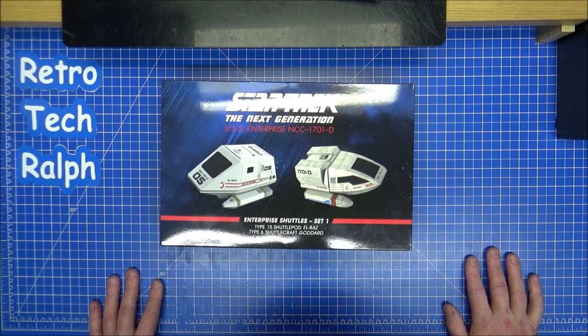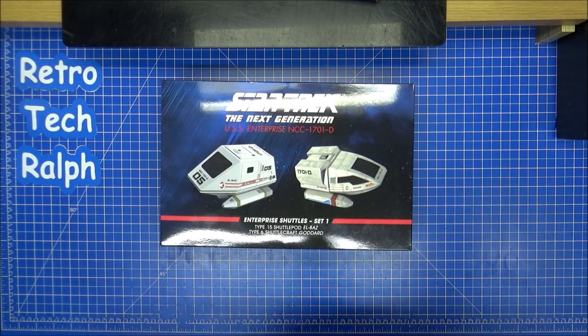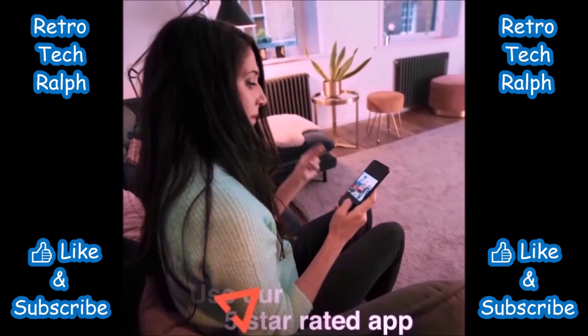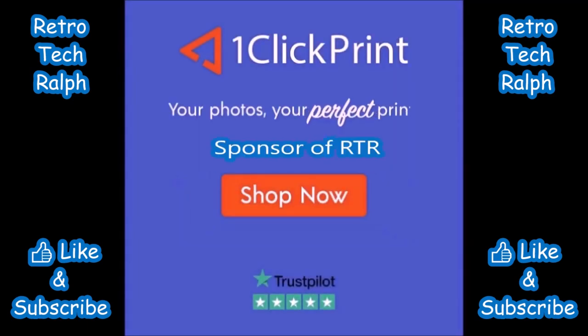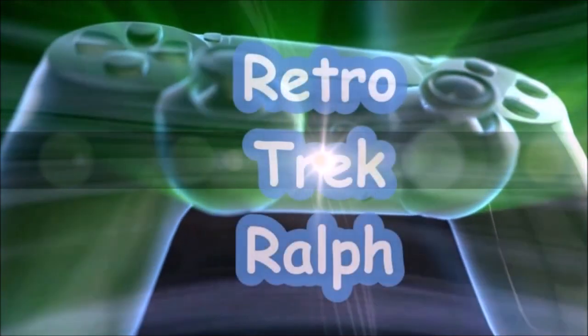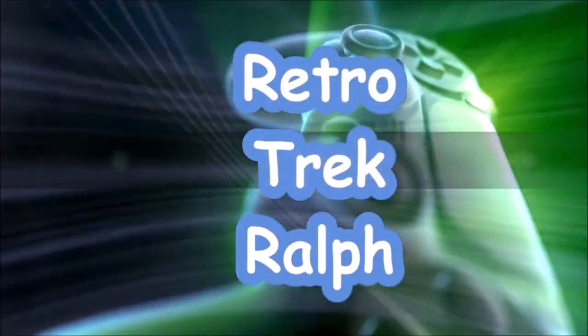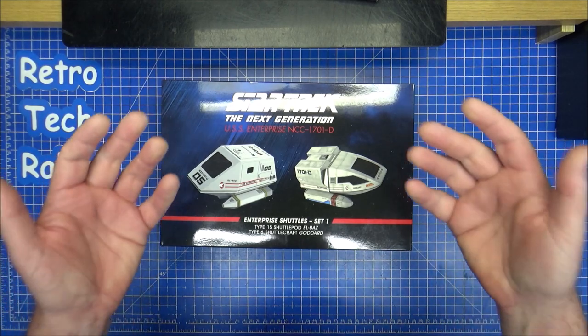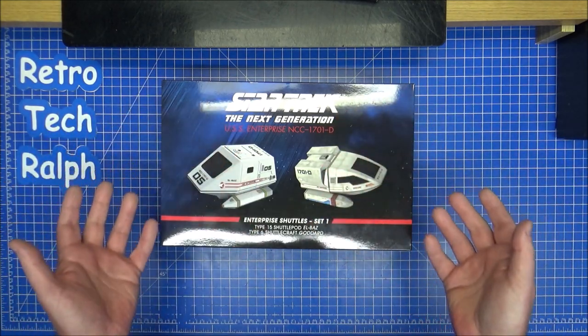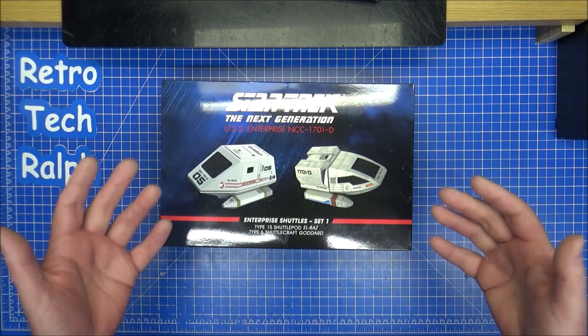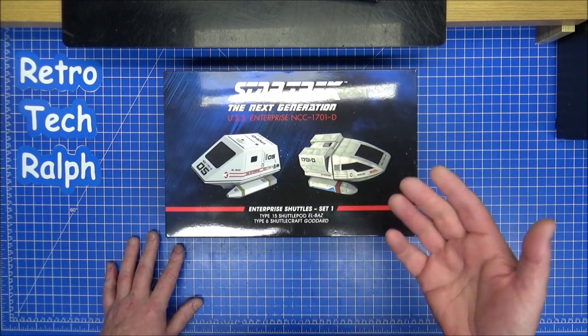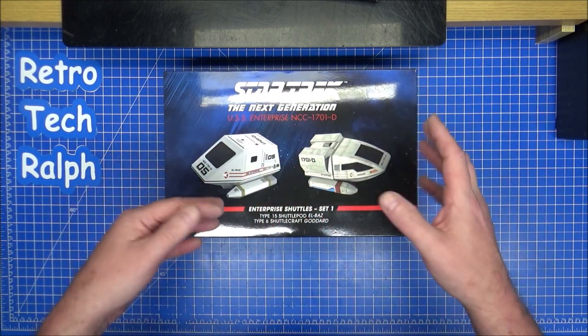Shuttles time! Let's have a look and see if these are any different than what we've had before. Hi guys, Retro Trek Ralph with another Star Trek The Next Generation. This is from the Build USS Enterprise D collection. This is a two-shuttle set. I assume by saying set one that we will be getting more.